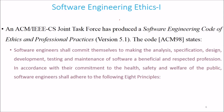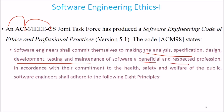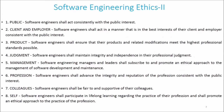On Software Engineering Ethics, the ACM-IEEE joint task force has produced the Software Engineering Code of Ethics and Professional Practice. This code says that software engineers shall commit themselves to making the analysis, specification, design, development, testing, and maintenance of software a beneficial and respected profession, in accordance with their commitment to the health, safety, and welfare of the public. Software engineers should adhere to these principles.